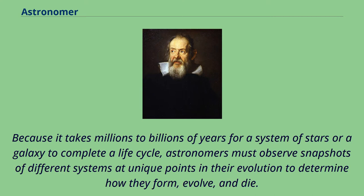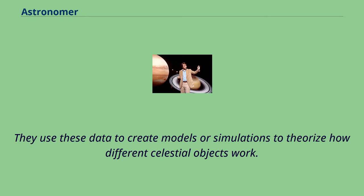Because it takes millions to billions of years for a system of stars or a galaxy to complete a life cycle, astronomers must observe snapshots of different systems at unique points in their evolution to determine how they form, evolve, and die. They use these data to create models or simulations to theorize how different celestial objects work.